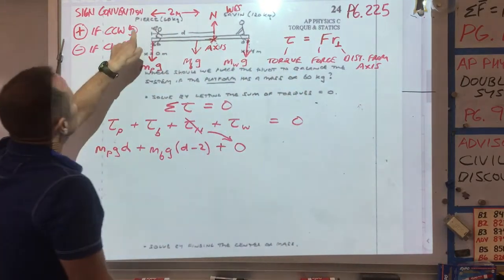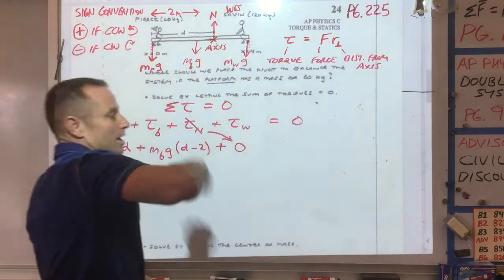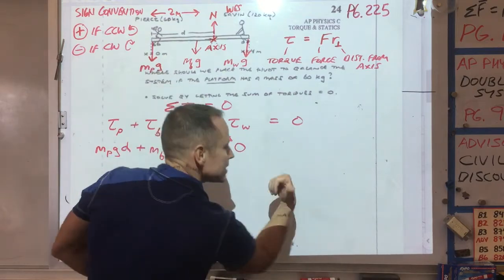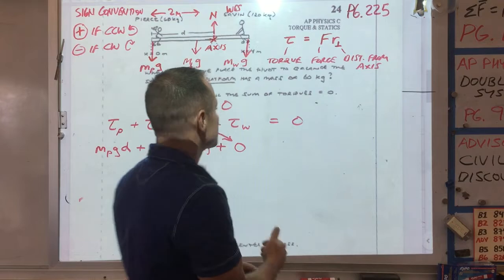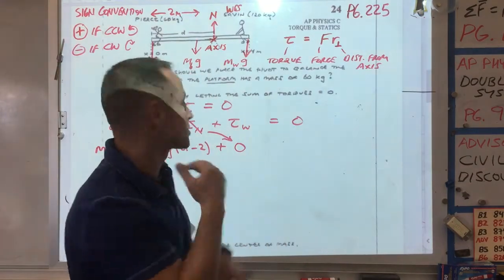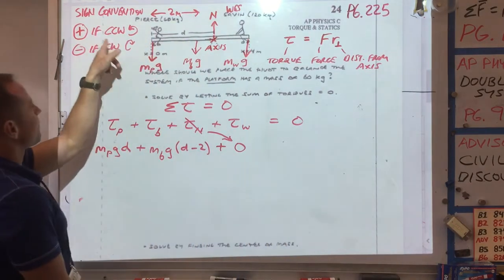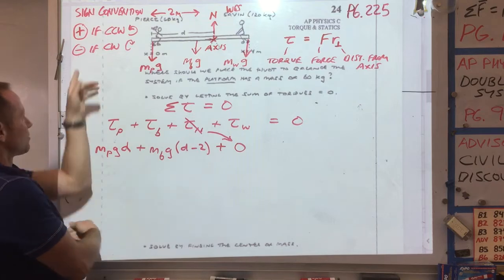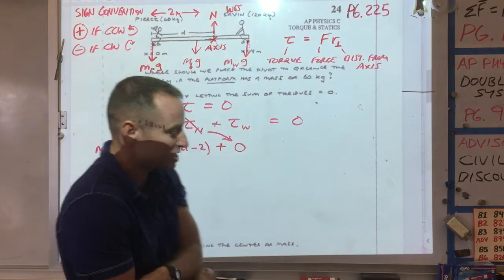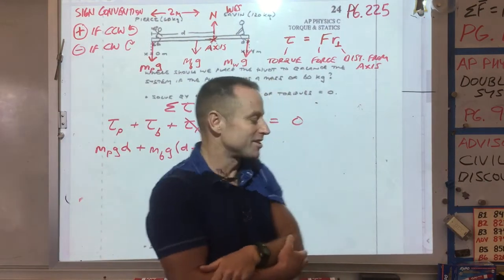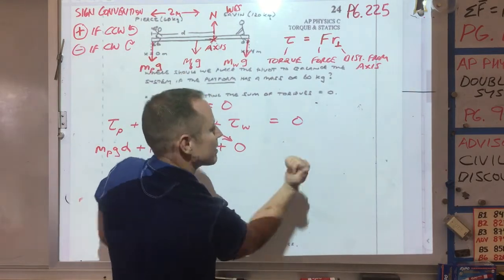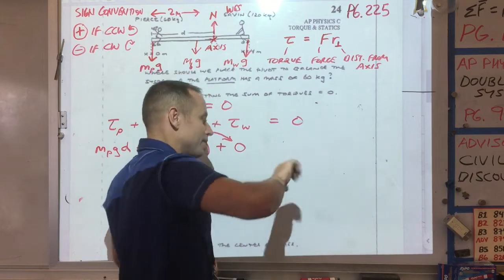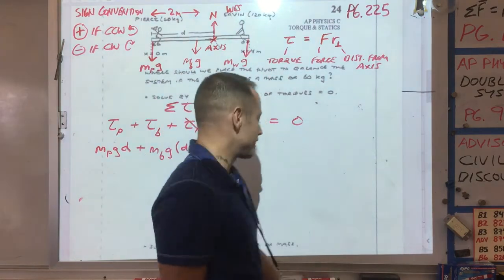That removes all the ambiguity about clockwise versus counterclockwise. So that's the second reason. If you notice that if something's going counterclockwise, then the torque would be out of the page or toward you, in the positive z direction. So that's another reason why we have this sign convention.